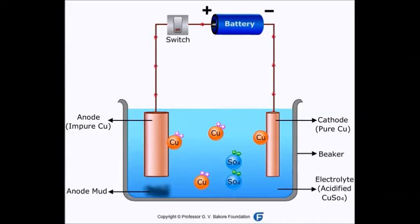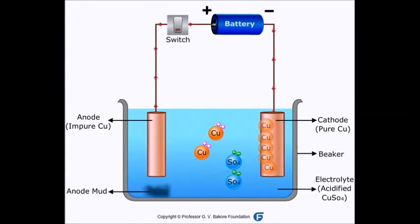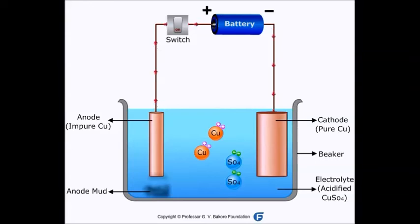As more and more copper atoms get deposited on the cathode, the cathode goes on becoming thicker. As atoms of copper are coming out of the anode, the anode goes on becoming thinner.